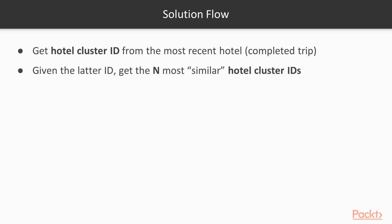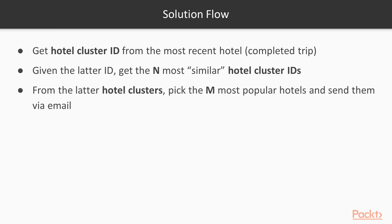So the flow is: get the hotel cluster ID from the most recent hotel that was booked. Given that hotel cluster ID, get the N most similar hotel cluster IDs from the embedding space. From those hotel clusters, pick the N most popular hotels and send them via email.